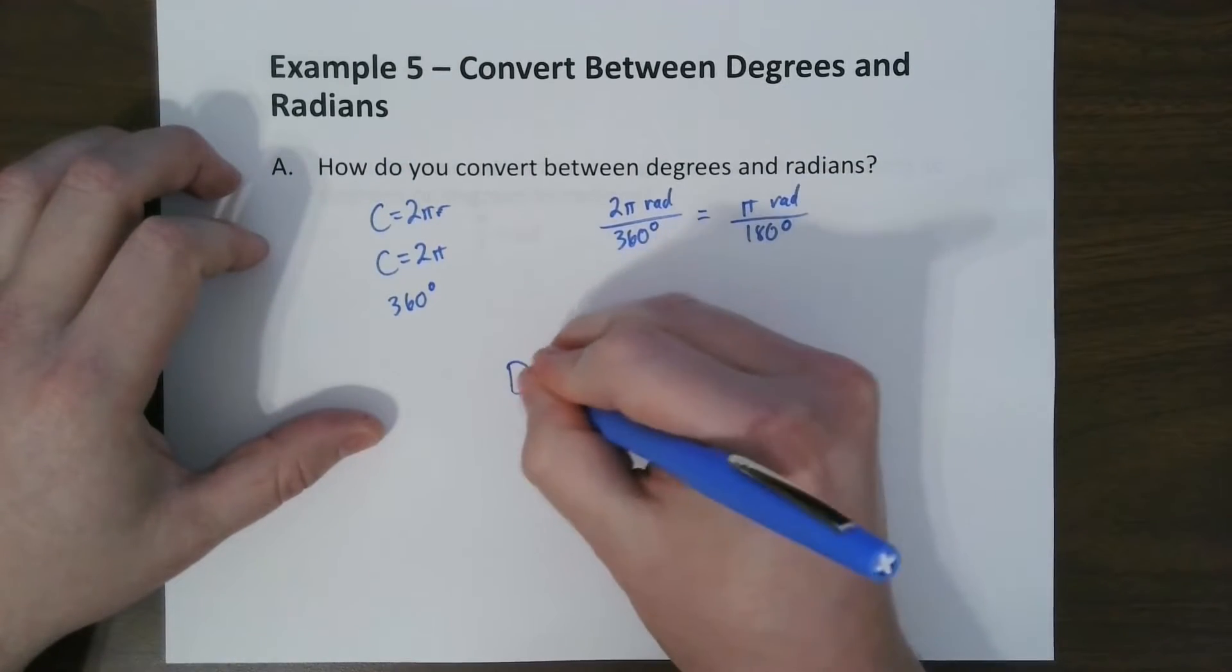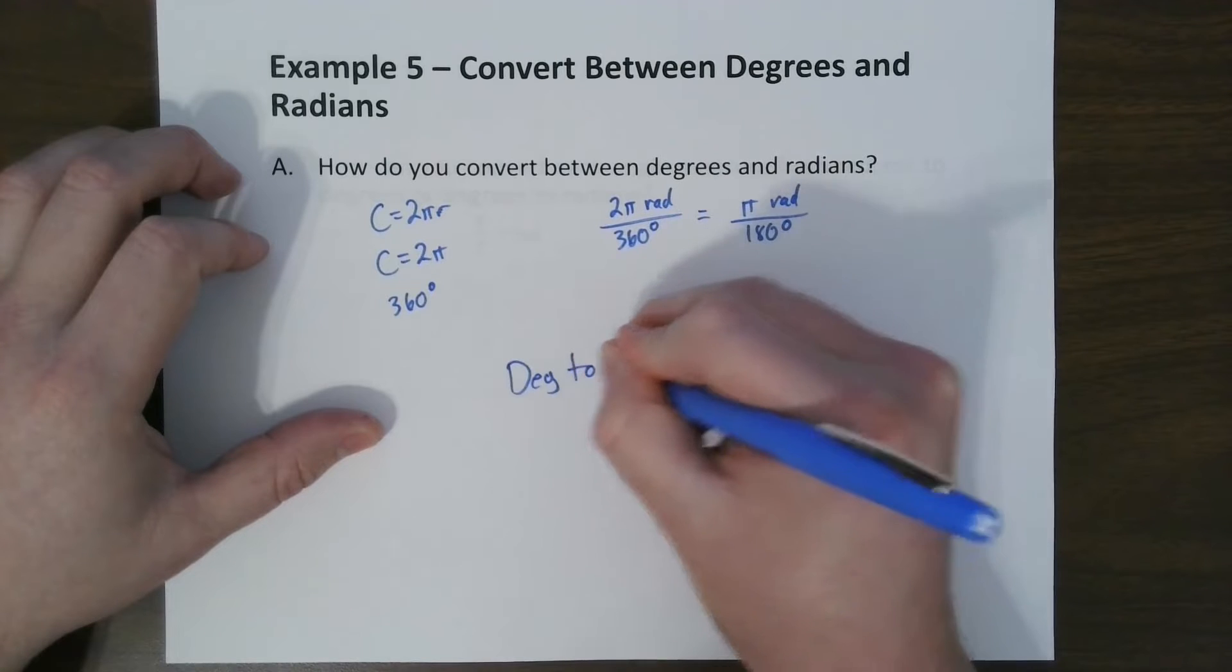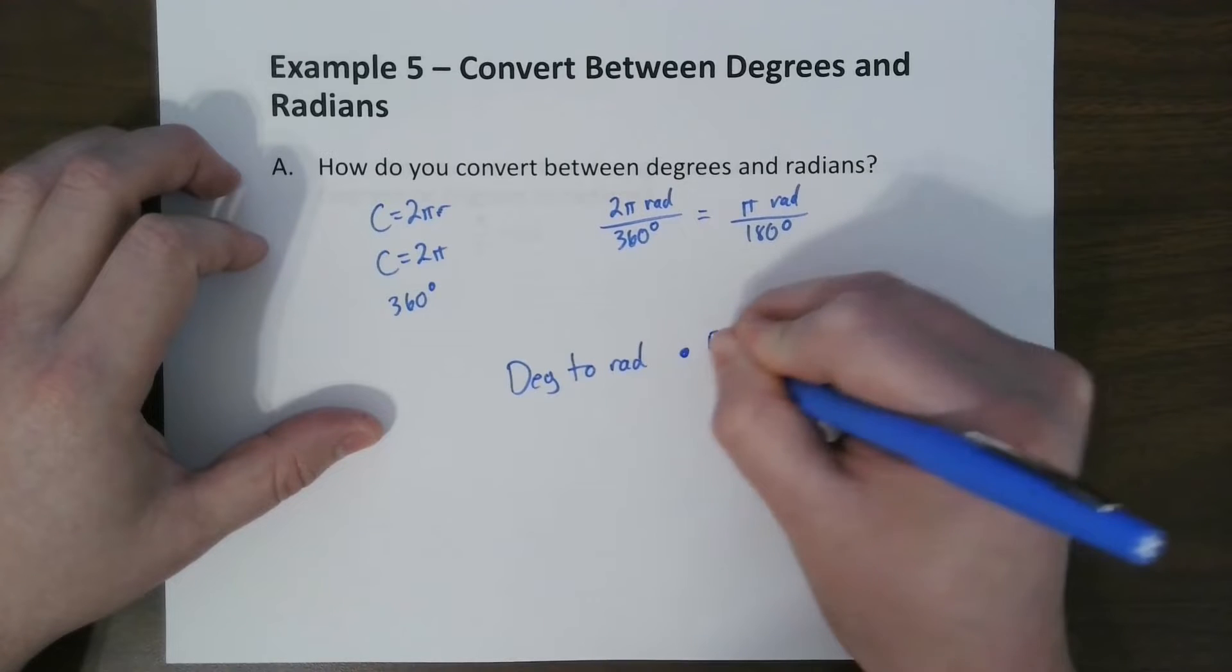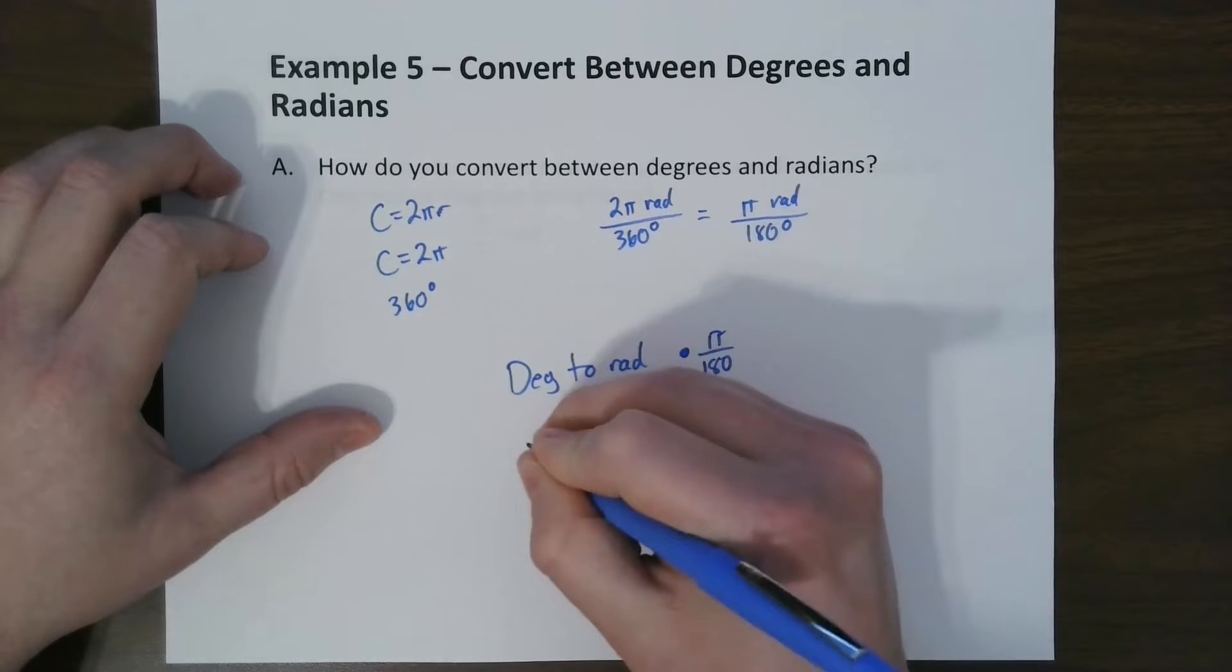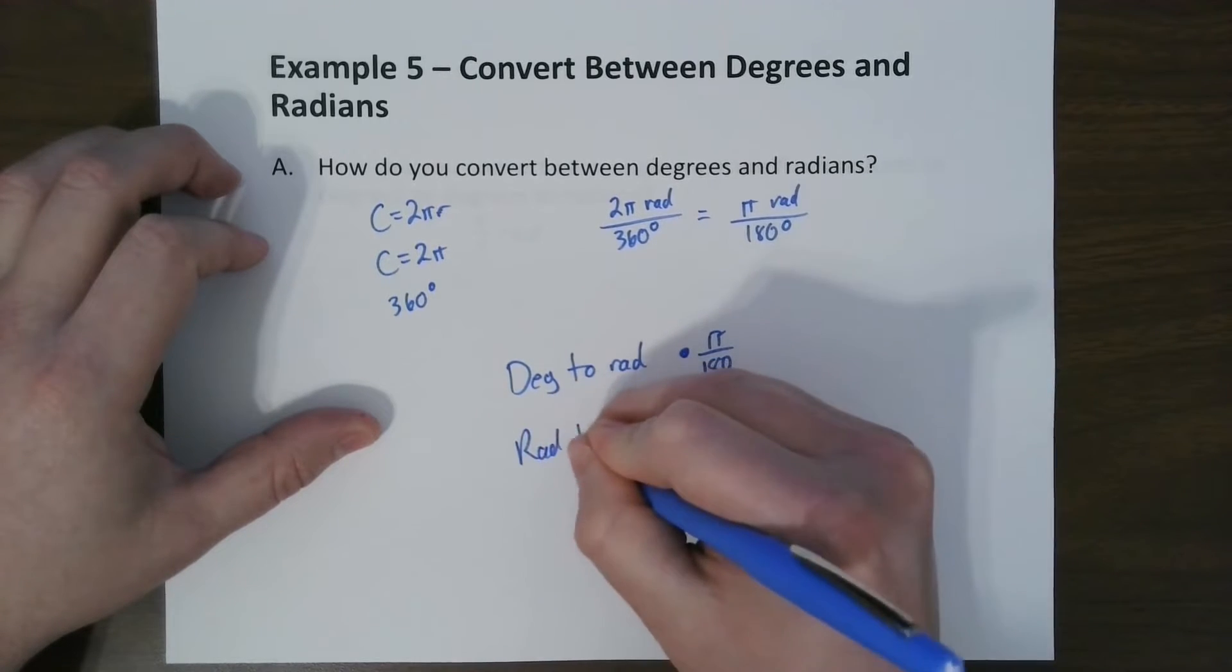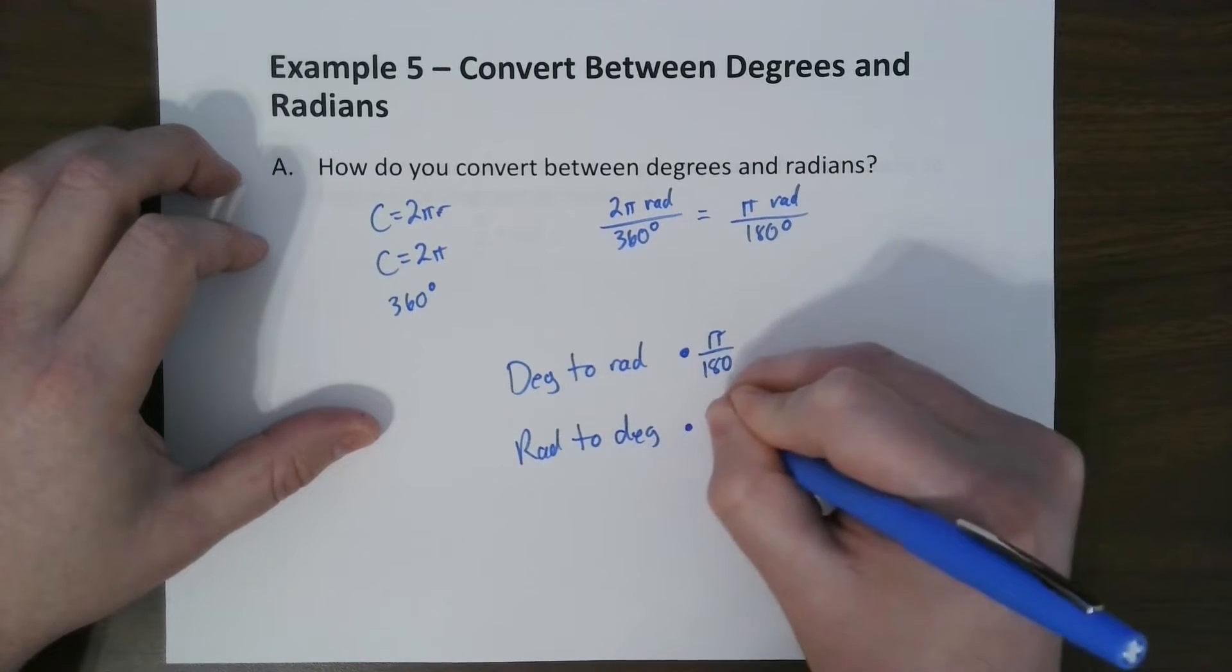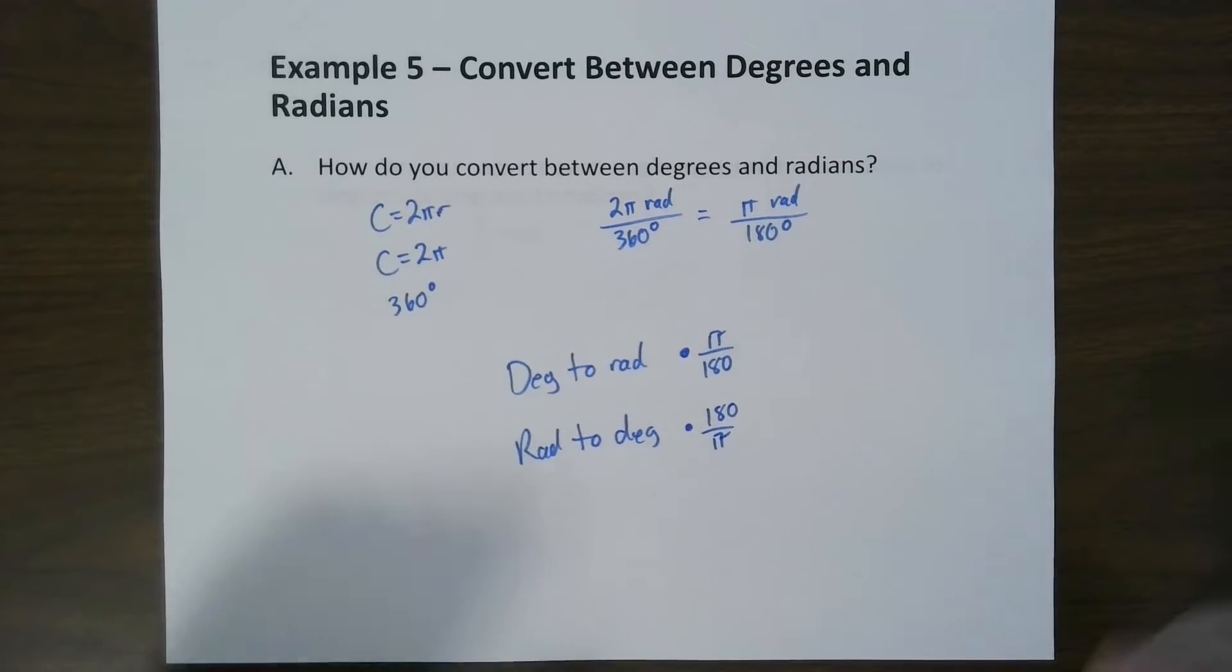And we can use this right here to convert from degrees to radians. So to go from degrees to radians, all you have to do is multiply by pi over 180. To go from radians to degrees, all we have to do is multiply by 180 over pi.